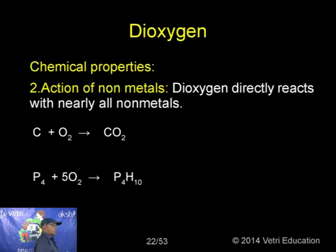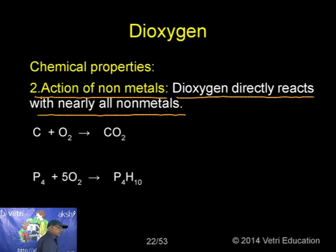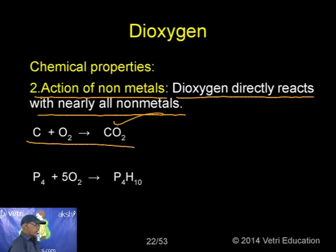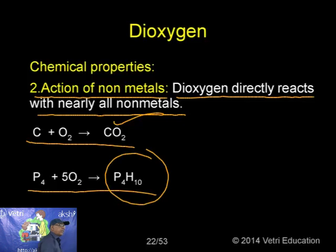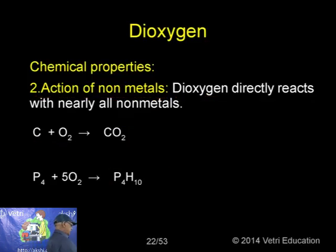Dioxygen also reacts with almost all non-metals. For example, carbon reacts with oxygen to give carbon dioxide, and phosphorus reacts with oxygen to produce P₄O₁₀ — the dimer of phosphorus pentoxide.